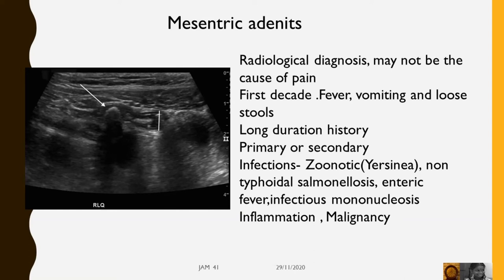Mesenteric adenitis is a radiological diagnosis. It may not be the true cause of pain abdomen. It usually occurs in the first decade of life. Fever, vomiting, and loose stools may be present. These patients typically have a long duration history.